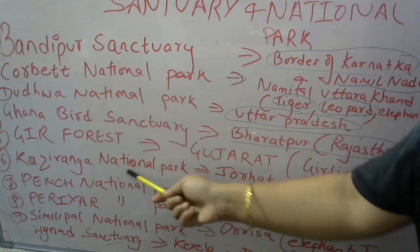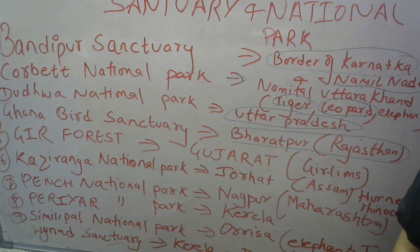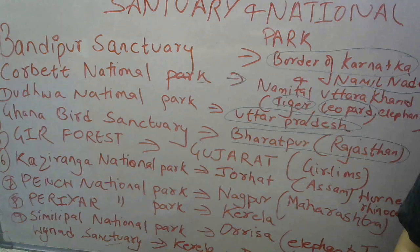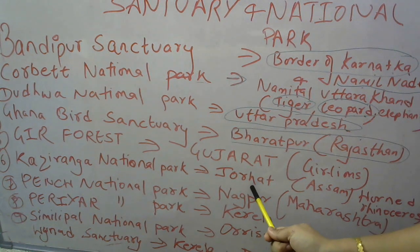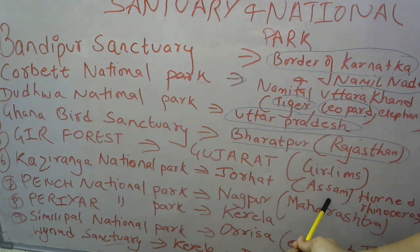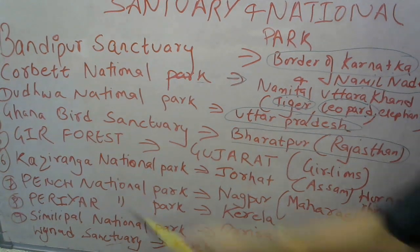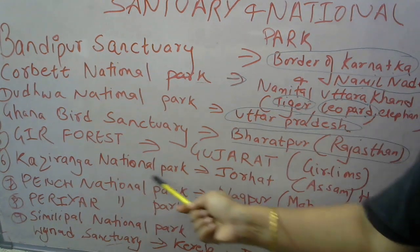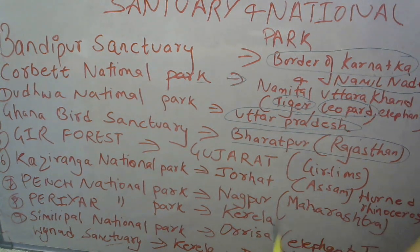Kaziranga is also a very important national park — it is asked so many times in exams. Kaziranga National Park is found in Jorhat, Assam. It is famous for the One-Horned Rhinoceros. Kaziranga National Park, located in Jorhat, Assam, is known for its One-Horned Rhinoceros.